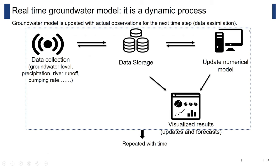The model will call this data and use the new observations to update the numerical model. Of course, we can also visualize all these results online. The whole process will be repeated over time. So the main part of the real-time model is to update the numerical model, and the method we use here is called data assimilation.